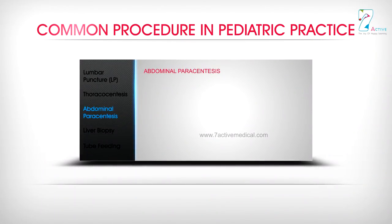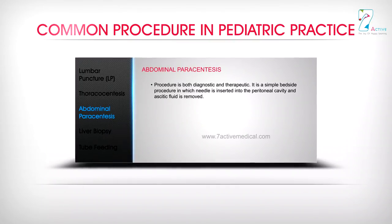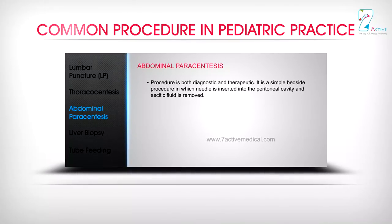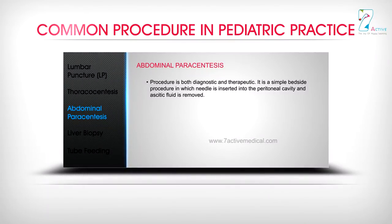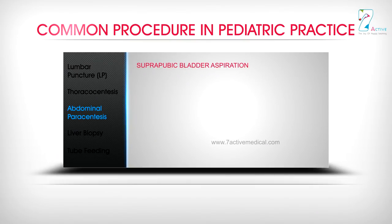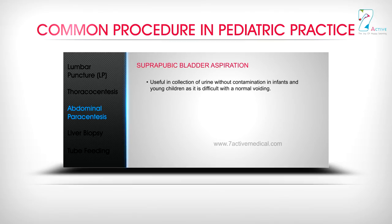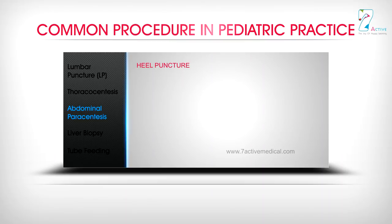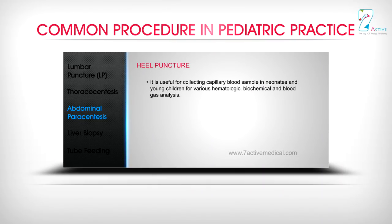Abdominal paracentesis: Both diagnostic and therapeutic, it is a simple bedside procedure in which a needle is inserted into the peritoneal cavity and ascitic fluid is removed. Suprapubic bladder aspiration: Useful for collection of urine without contamination in infants and young children; a 21 or 22 gauge needle is commonly used. Heel puncture: Useful for collecting capillary blood samples in neonates and young children for hematologic, biochemical, and blood gas analysis.